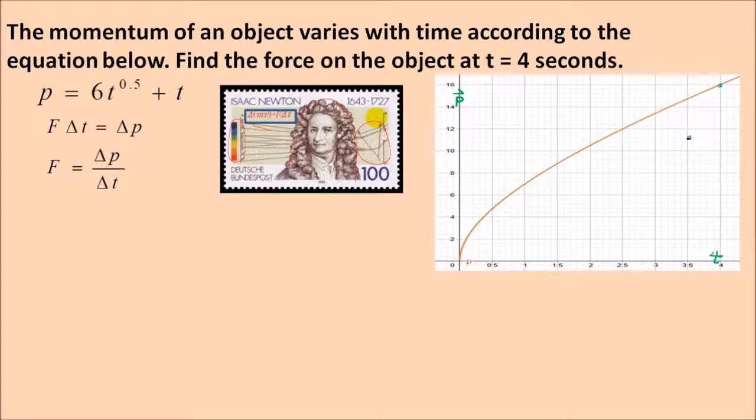Here's that impulse-momentum theorem I was telling you about. Force times delta t, that's called impulse, equals change of momentum. But that means force is the change of momentum divided by the change in time. In other words, the rate of change of momentum. Who came up with this idea? It's the same guy who was one of the creators of calculus and one of the most important physicists of all time, Sir Isaac Newton. There's a stamp dedicated to him by the Germans. Right there in the little blue box, you can see the impulse-momentum theorem.